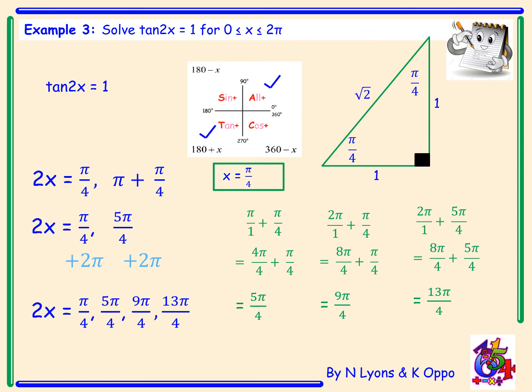Therefore 2x = π/4, 5π/4, 9π/4, and 13π/4. Since this is 2x, we finally divide everything by 2 — which is the same as multiplying the denominator by 2. This gives x = π/8, 5π/8, 9π/8, and 13π/8.